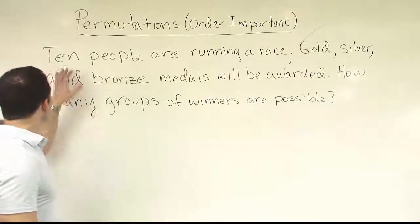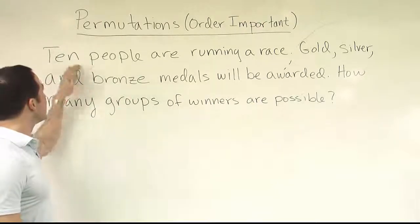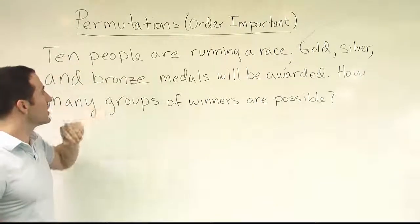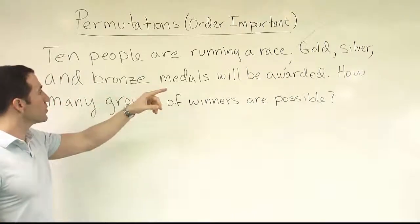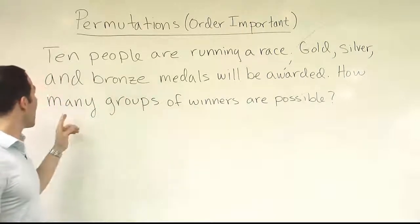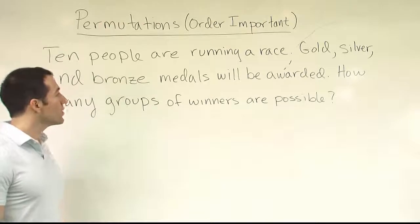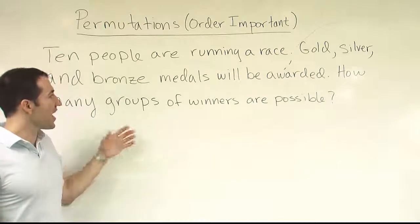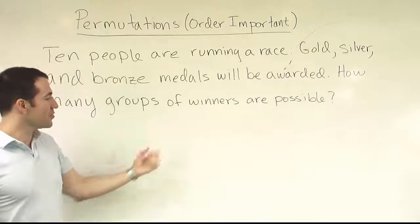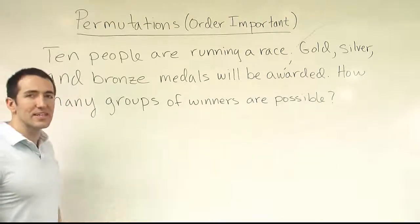We have an example problem we'll work from. It says 10 people are running a race, and gold, silver, and bronze medals will be awarded. How many groups of winners are possible? We want to figure out how many different groups of three people could win the race.